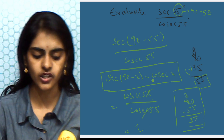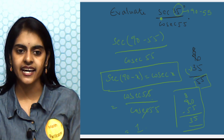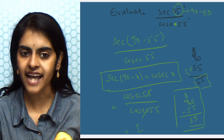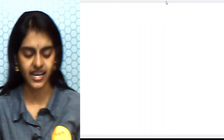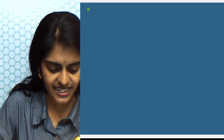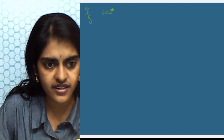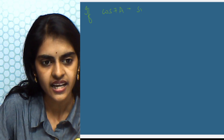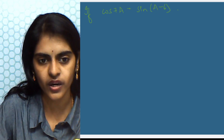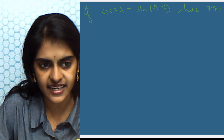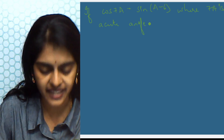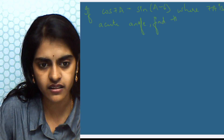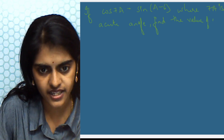So the answer is 1. Either you convert the secant into cosecant, or you rewrite the angle as 90° minus the other — both methods are correct. Now let us see another question: if cos 7a = sin(a − 6°), where 7a is an acute angle, find the value of a.